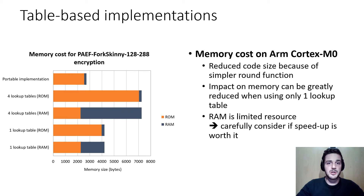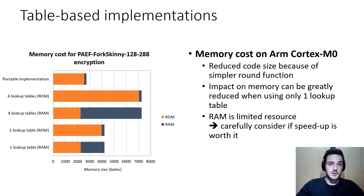Regarding memory cost of the different table implementation variants: the code size without the tables is reduced compared to portable implementations due to the simpler round function. Storing the tables introduces extra cost, but this can be greatly reduced when using a single lookup table. Another option is to store the tables in RAM memory if enough RAM is available.